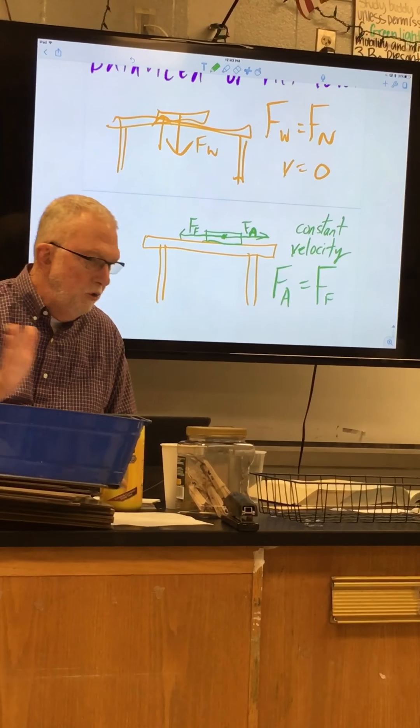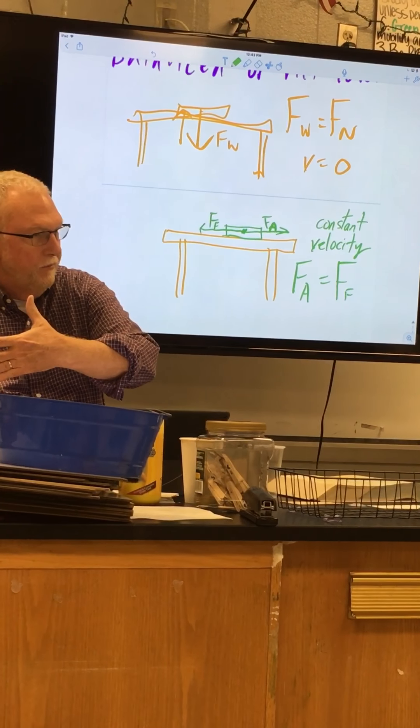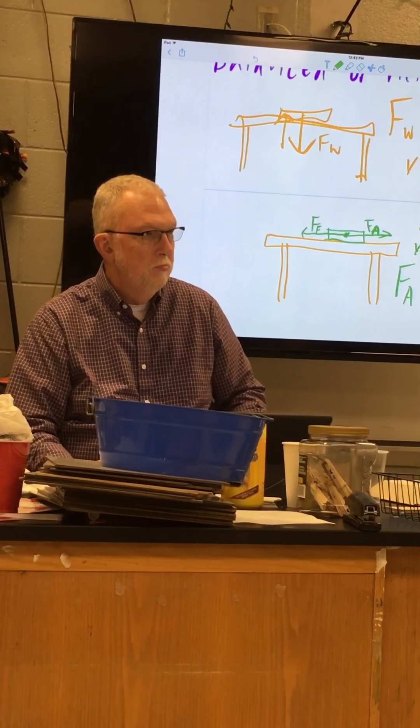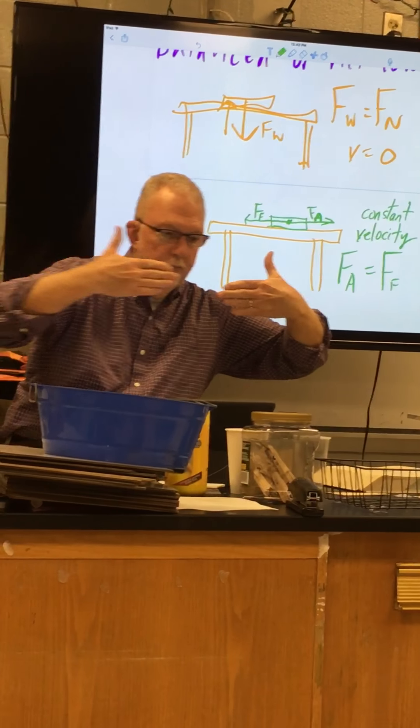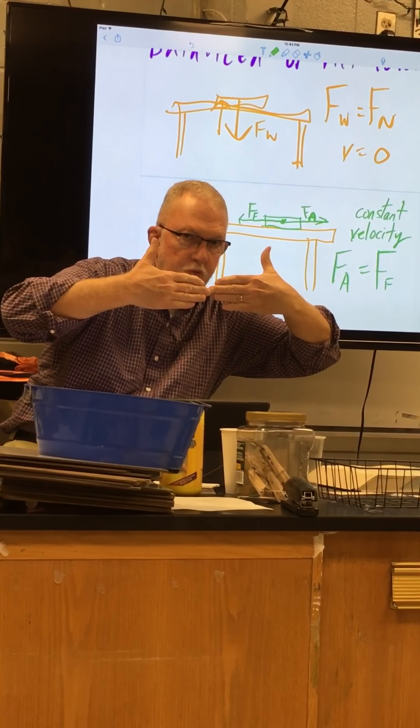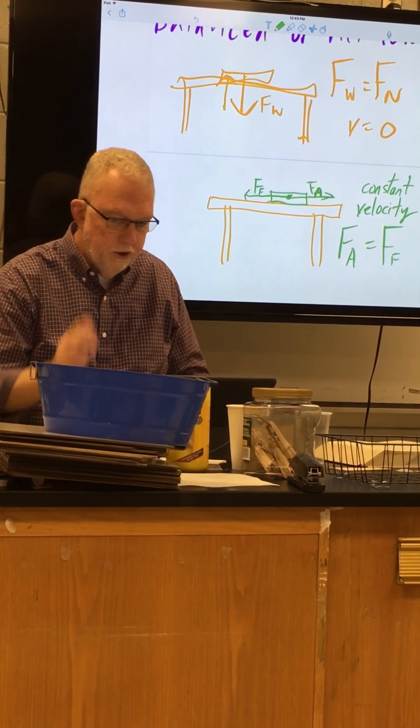However much you push it is equal to how much the table is resisting it moving. So it's moving along like this because you're pushing this way and friction's pushing this way. If both of those are equal, you have constant velocity. Now there's one other scenario...